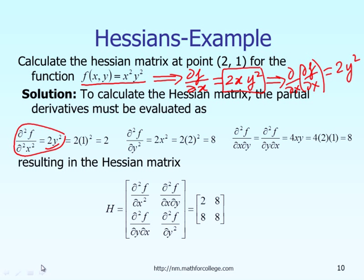Similarly, you can calculate the second derivative of f with respect to y squared, which equals 2x squared. And if you take the second derivative with respect to x first and then y, that is the same as taking it with respect to y first and then x, and the answer is 4xy.